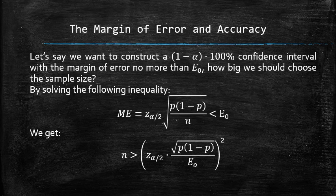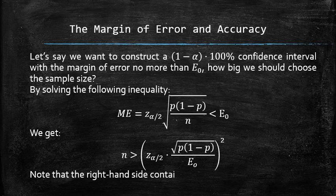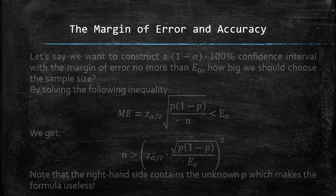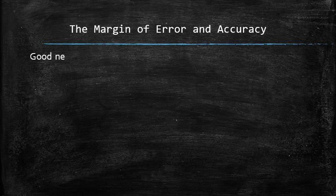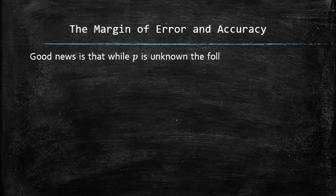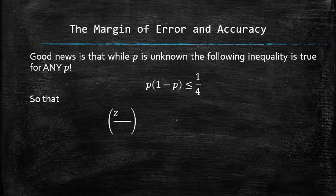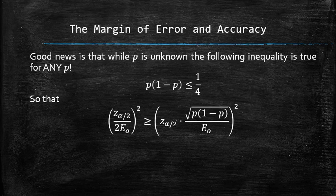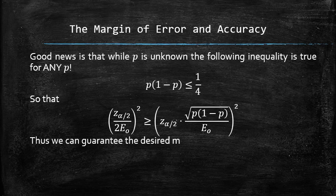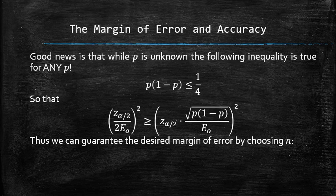Note that the right-hand side of this inequality contains the unknown value of the parameter p, which makes the formula useless. The good news is that while p is unknown, the following inequality is true for any value of p, so that the following inequality holds. Thus, we can guarantee the desired margin of error by choosing the sample size to be greater than the following expression.